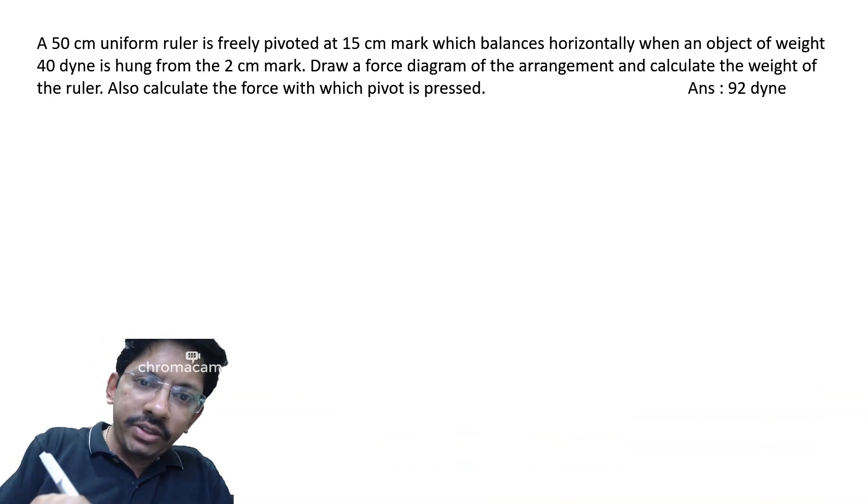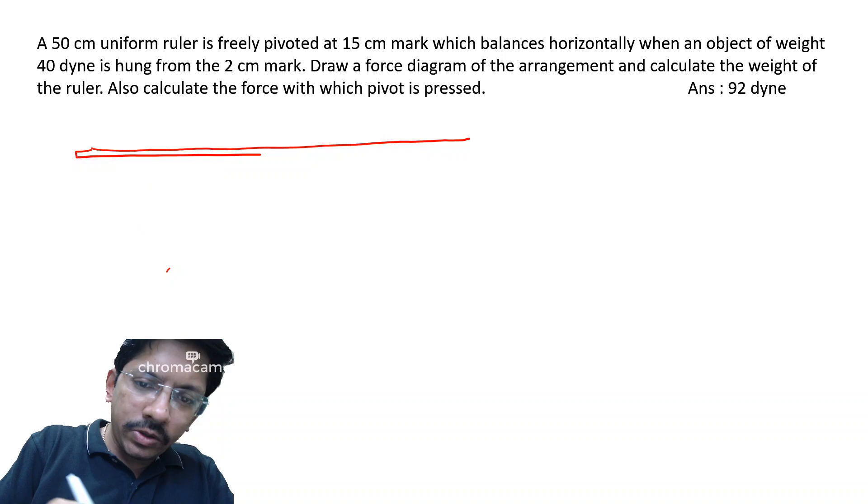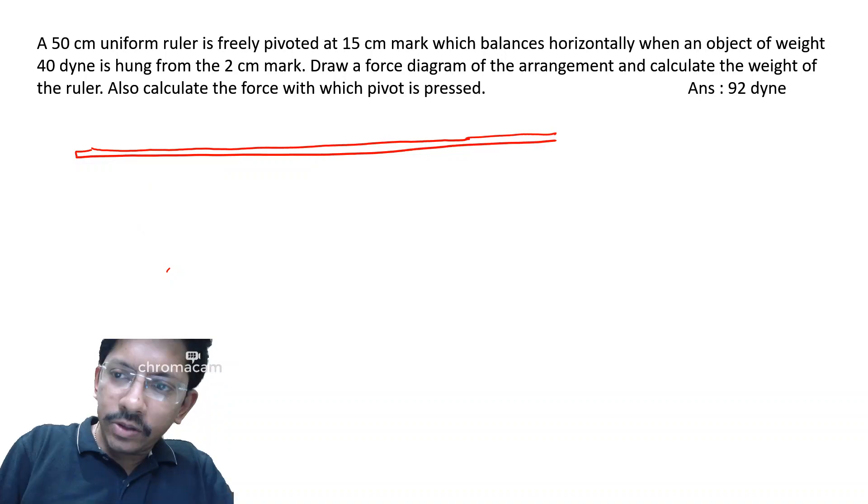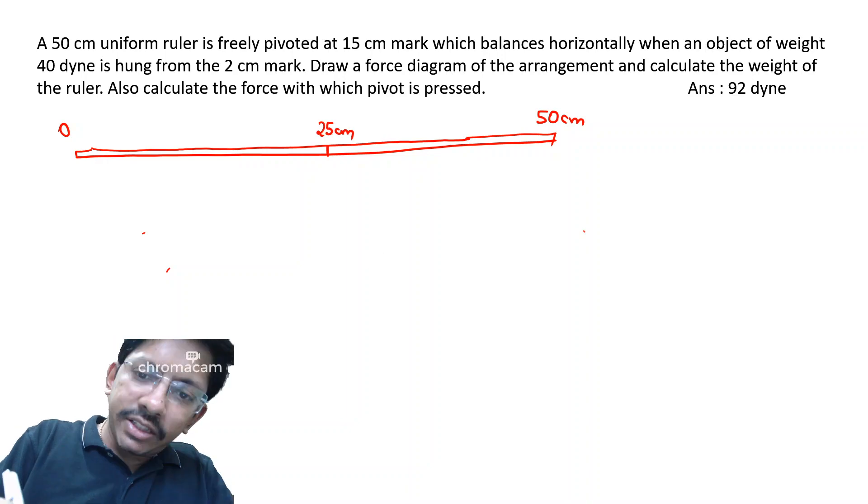A 50 centimeter ruler, here is 0 centimeter, here is 50 centimeter, and the center of gravity will be at 25 centimeter. It is pivoted at 15 centimeter mark.